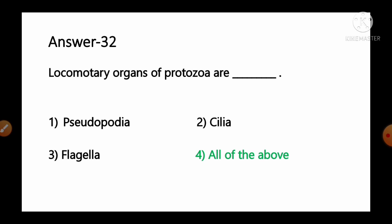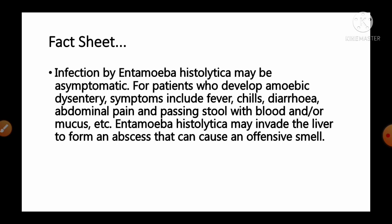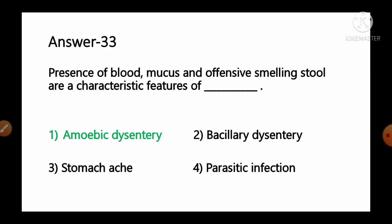Question number 33: Presence of blood, mucus and offensive-smelling stool are characteristic features of — options: 1) amoebic dysentery, 2) bacillary dysentery, 3) stomach ache, 4) parasitic infections. Infection by Entamoeba histolytica may be asymptomatic, but patients who develop amoebic dysentery have symptoms including fever, chills, diarrhea, abdominal pain, and stool with blood and mucus. Entamoeba histolytica may invade the liver and cause an offensive smell. So option number 1, amoebic dysentery, is the correct answer.